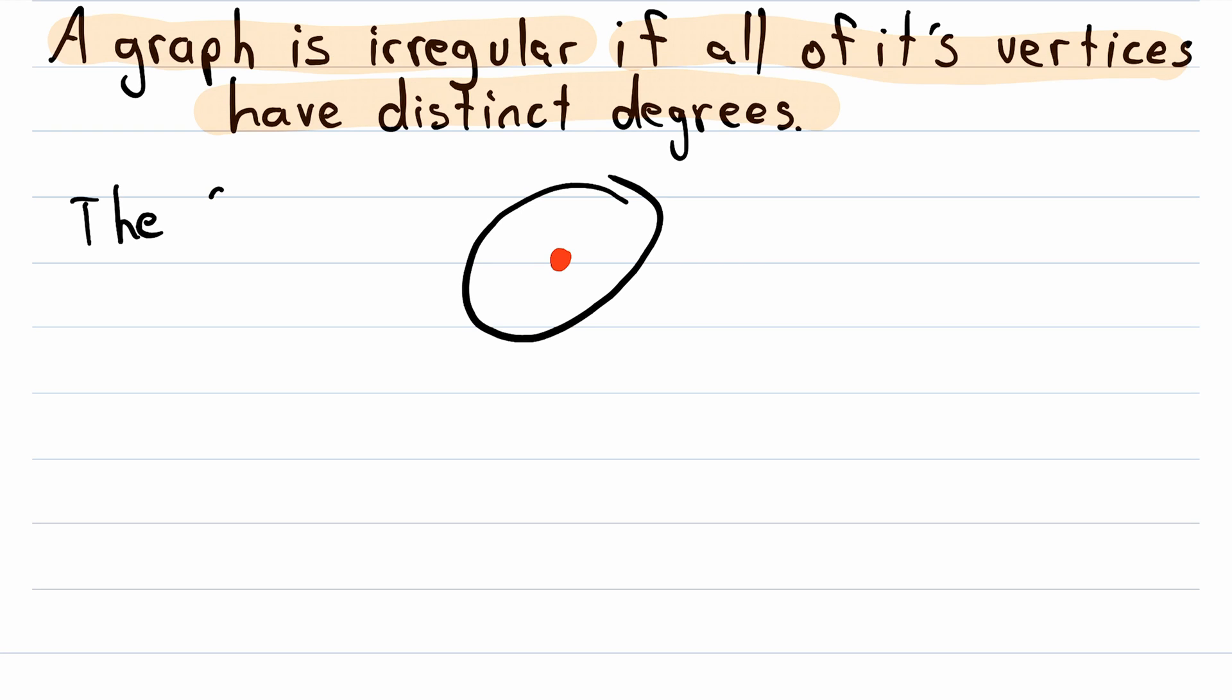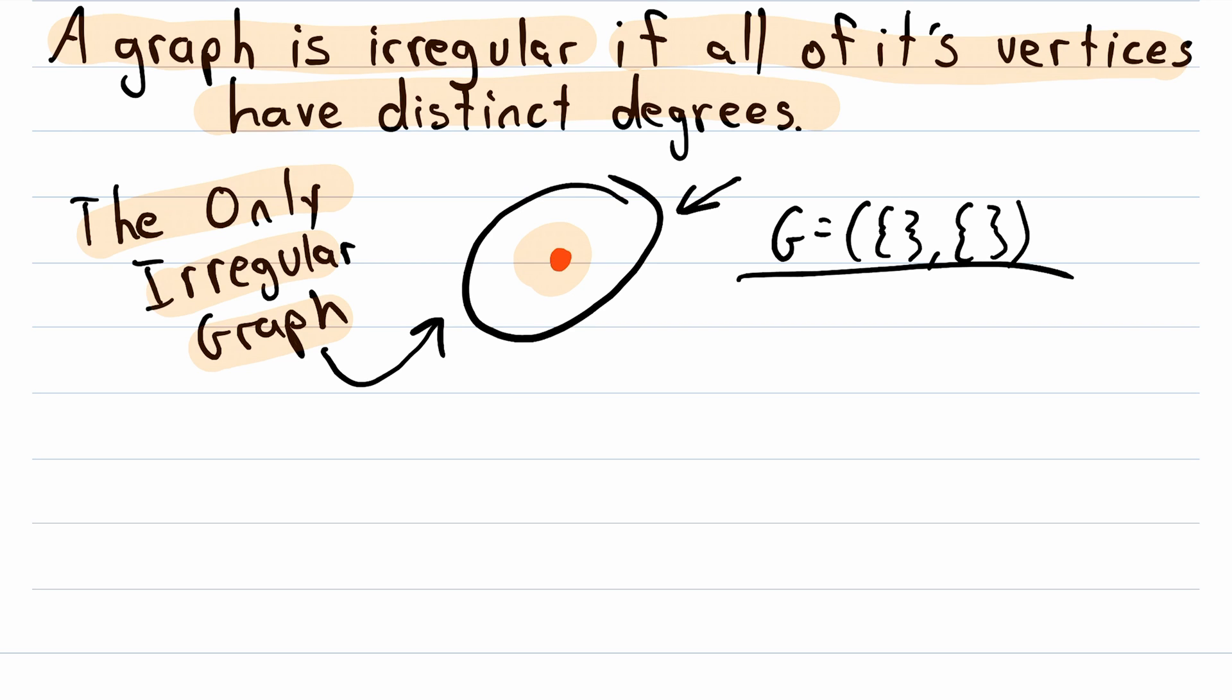So what's so boring about irregular graphs? Well, what's boring is that this is in fact the only irregular graph. That's right, it might seem a little crazy, but believe it or not, this is the only one. Of course, this graph is irregular because no vertices in the graph have the same degree. You could say that there is one other irregular graph, which is the graph that has no vertices and no edges. This is sometimes called the null graph, but some texts don't even consider this to be a graph. But either way, depending on what you consider to be a graph, there's either one irregular graph or two irregular graphs, but no more.